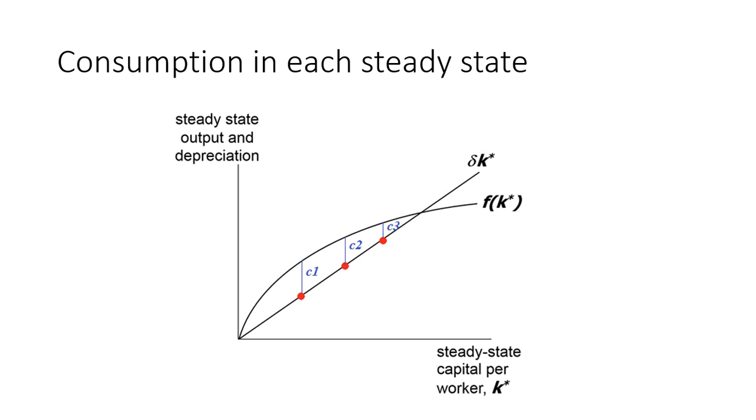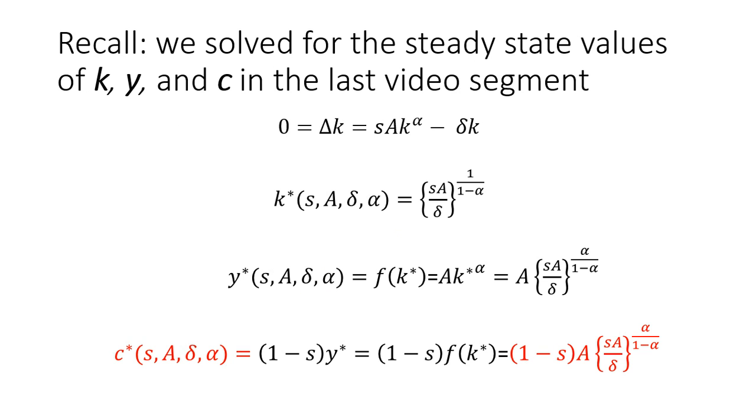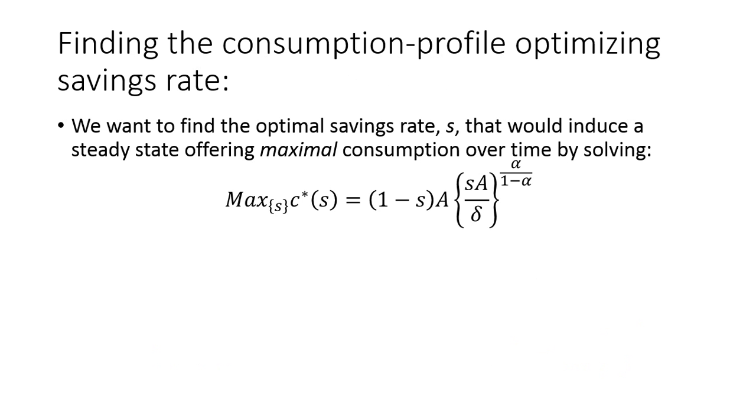So it seems if you could choose between those three, you might want to choose steady state one and enjoy level of consumption C1. Now recall, we had found out already how consumption in the steady state depends on the savings rate. So we could easily ask the question, what value of the savings rate actually gives us the maximum amount of consumption? Essentially we want to solve this optimization problem where we're maximizing the consumption profile by treating the savings rate as almost like a choice variable, a policy variable.